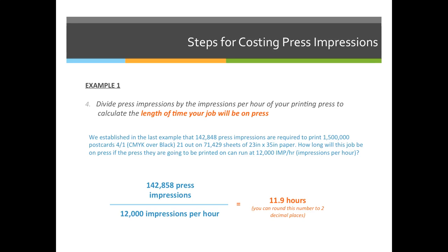I'm going to write impressions as IMP in all capitals. Make sure that when you submit your homework and your quiz, you do the same. So the formula to calculate the total time this job will be on press is 142,858 press impressions divided by 12,000 impressions per hour. When we divide 142,858 by 12,000, the answer is 11.9. If you come up with a longer decimal, you should round the number to two decimal places. If you would like to get the answers correct on the homework and the quiz online, you have to round properly.